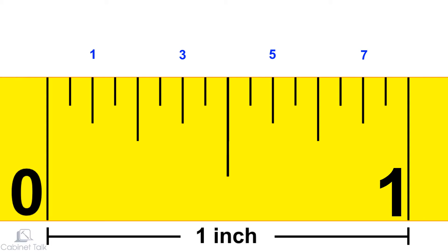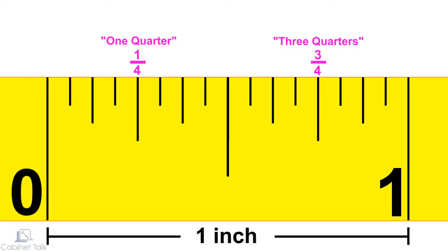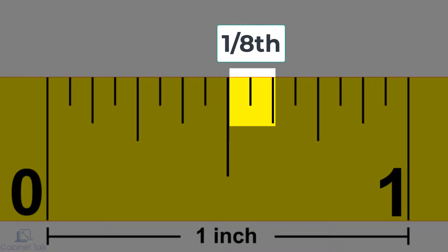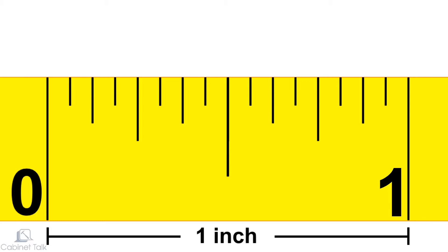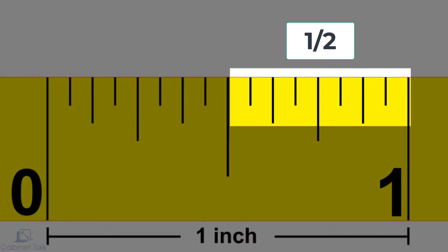The same trick works for the eighth-inch marks, as well as the quarter-inch marks. Another way to think about it is to visualize the spacing between the marks. Every two marks is an eighth-inch, every four marks is a quarter-inch, and every eight marks is half an inch.